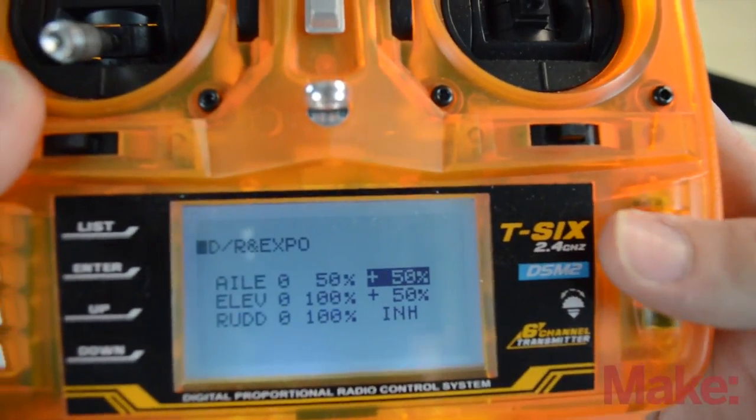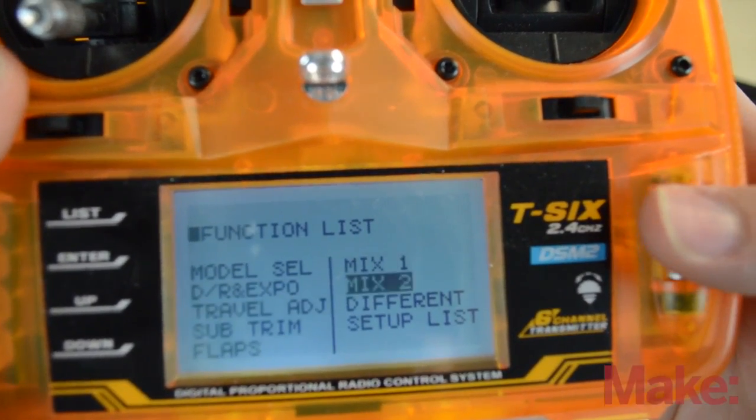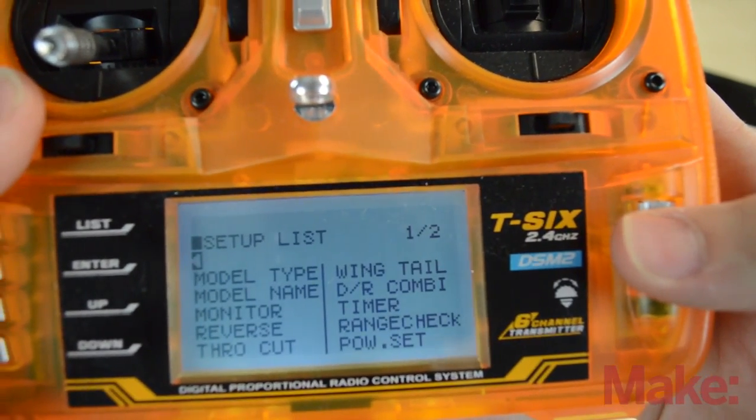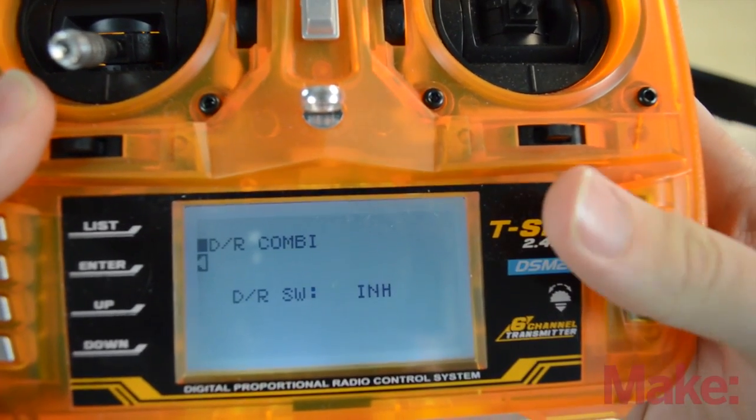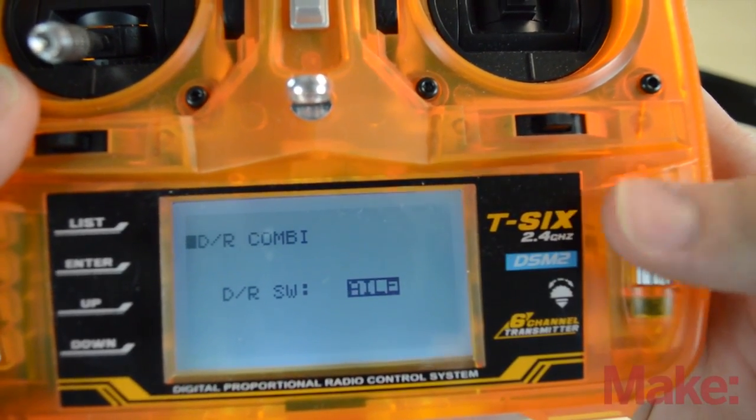So I'm going to go back in the menu, go backwards, go to the setup list, go down to dual rate combo, and then set that up to be my aileron.